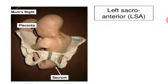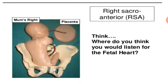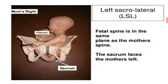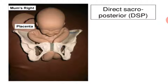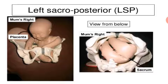Left sacro-anterior: the fetus sacrum is on the left side and anterior side. Right sacro-anterior: the fetus sacrum is on the right anterior side. Left sacro-lateral: the fetus sacrum is on the left and posterior-lateral side. Right sacro-lateral: the fetus sacrum is on the right lateral side. Left sacro-posterior: the fetus sacrum is on the left posterior side.